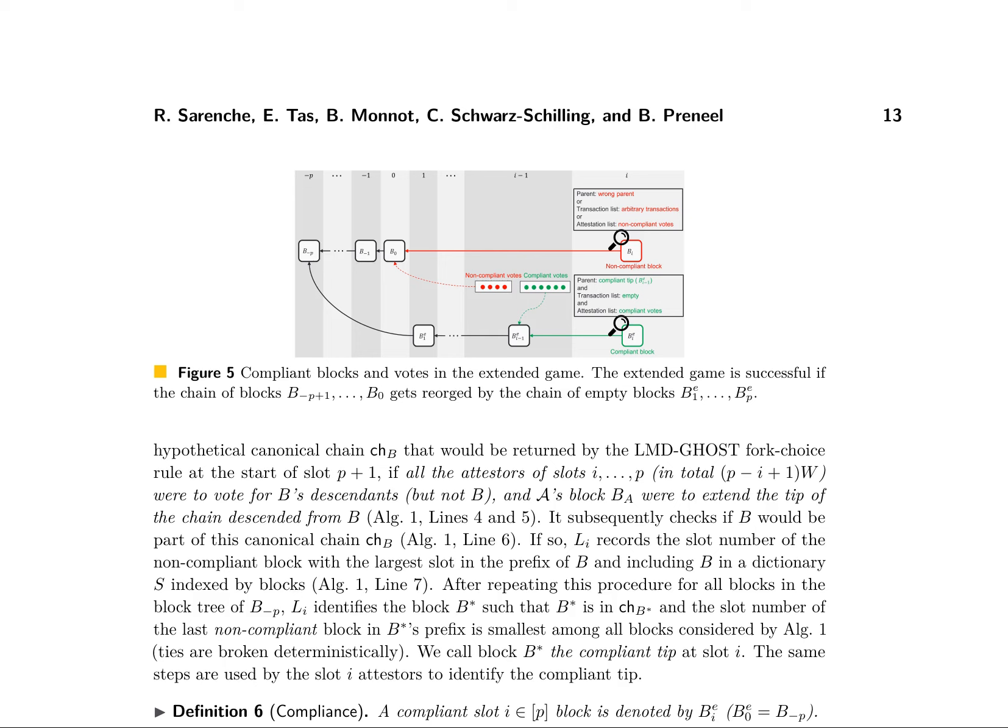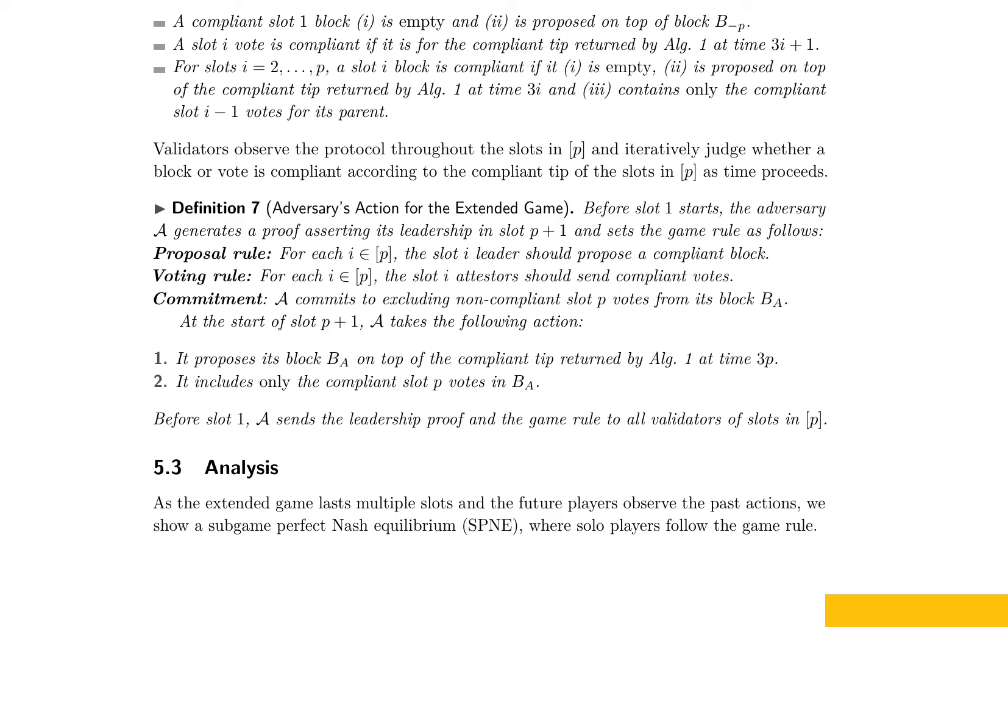The research examines the security vulnerabilities in Ethereum's reward mechanism, specifically focusing on the LMD GHOST fork choice rule. It introduces the concept of compliant blocks and votes, which are crucial for the extended game. Validators observe the protocol, judging blocks and votes as compliant based on the compliant tip. The adversary proposes compliant blocks and excludes non-compliant votes, leading to a sub-game perfect Nash equilibrium where the adversary succeeds in violating the security of LMD GHOST. The analysis demonstrates the applicability of the attacks to Ethereum with single-slot finality and other similar protocols, highlighting the need for a more robust security mechanism.